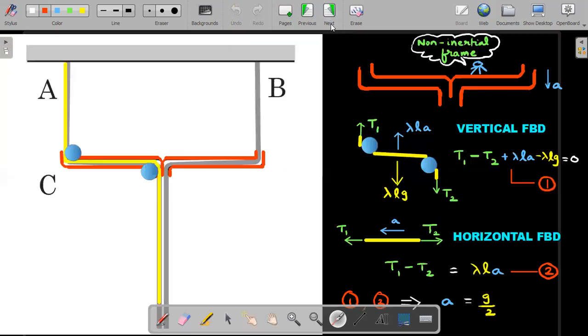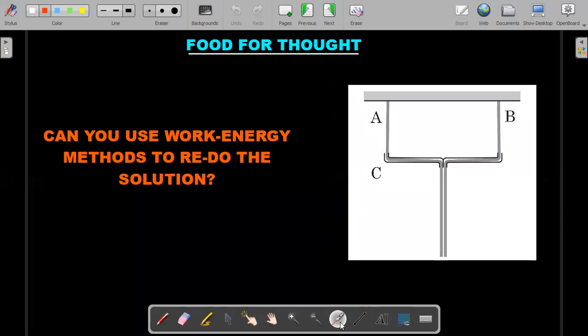So the food for thought I would like to have for you is, because this question is actually given in work energy chapter, there is another solution for this using purely work energy methods. And in that you will clearly see that the kinetic energy and potential energy sum up to always give you zero, which means there is no chance for the heat to be evolved. So in that sense you will be not only going to solve for the second method, but you will absolutely know that the option D is going to be wrong.